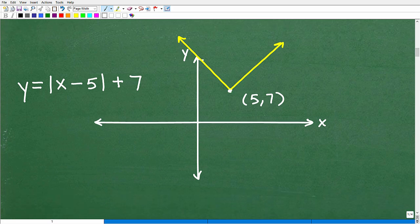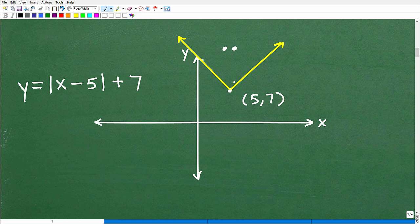Here is our vertex at 5, 7. We're going to draw a nice upward happy V. I'm like, hey, I'm happy to be a V living here on the XY plane, and there it is. This is the graph of our absolute value equation, something that you definitely need to know in algebra.